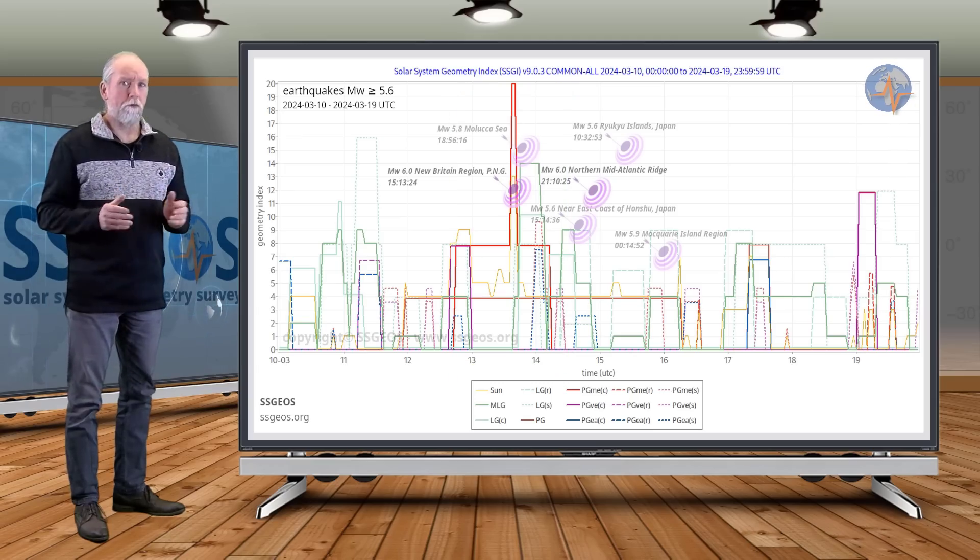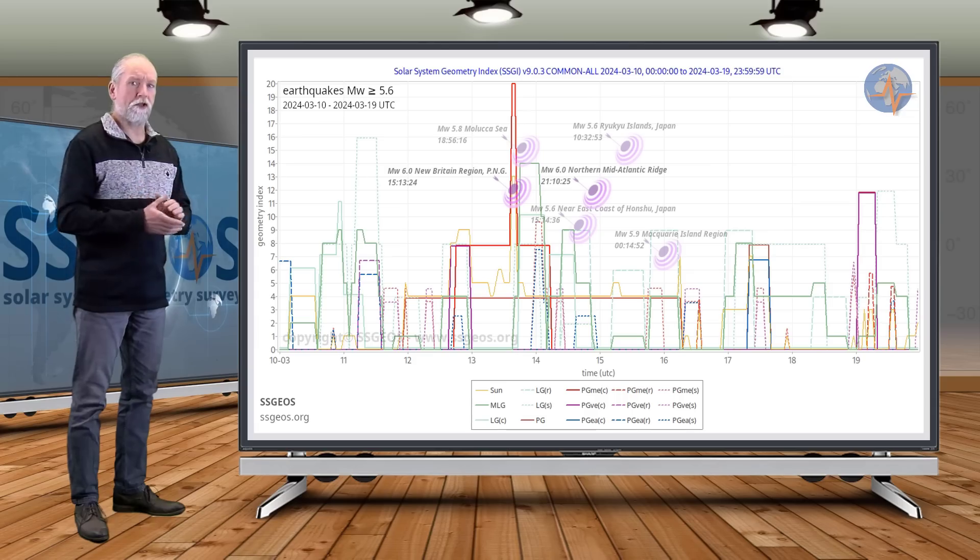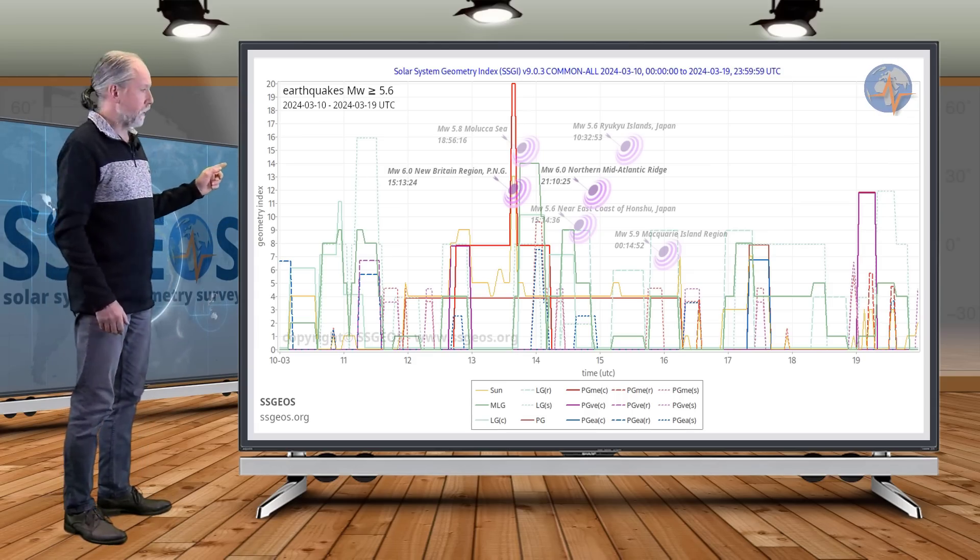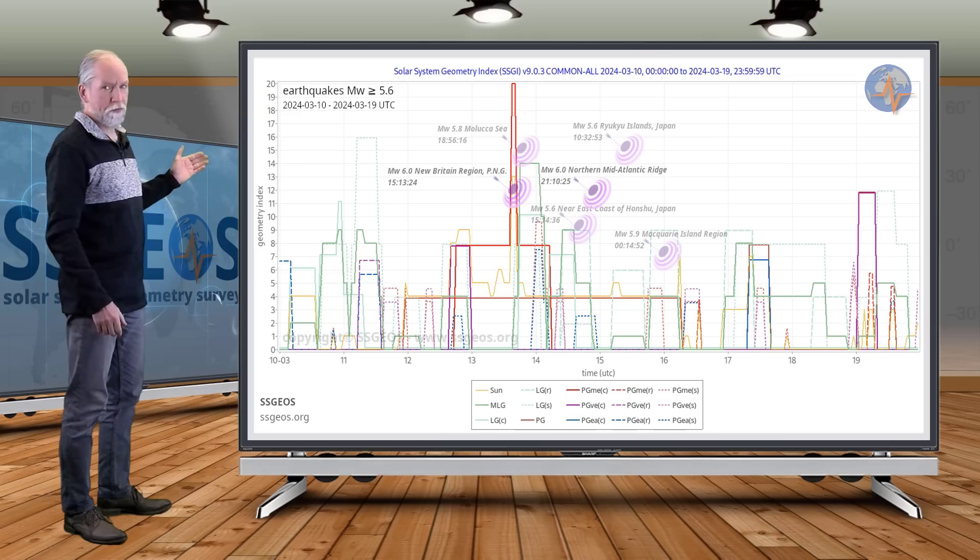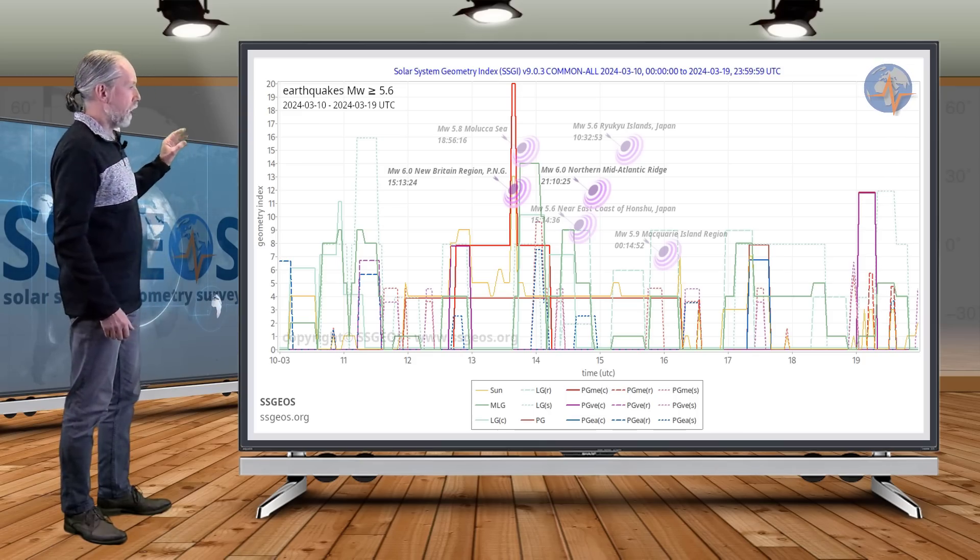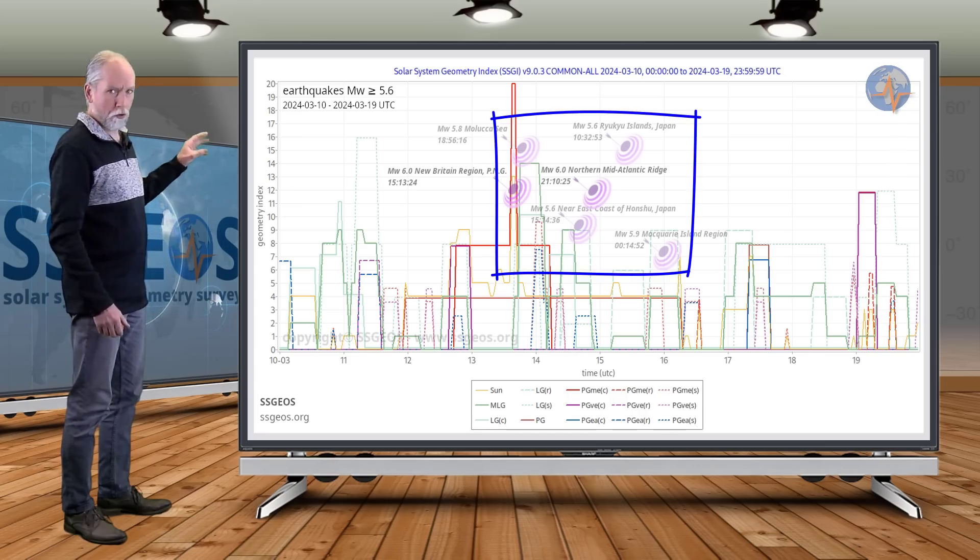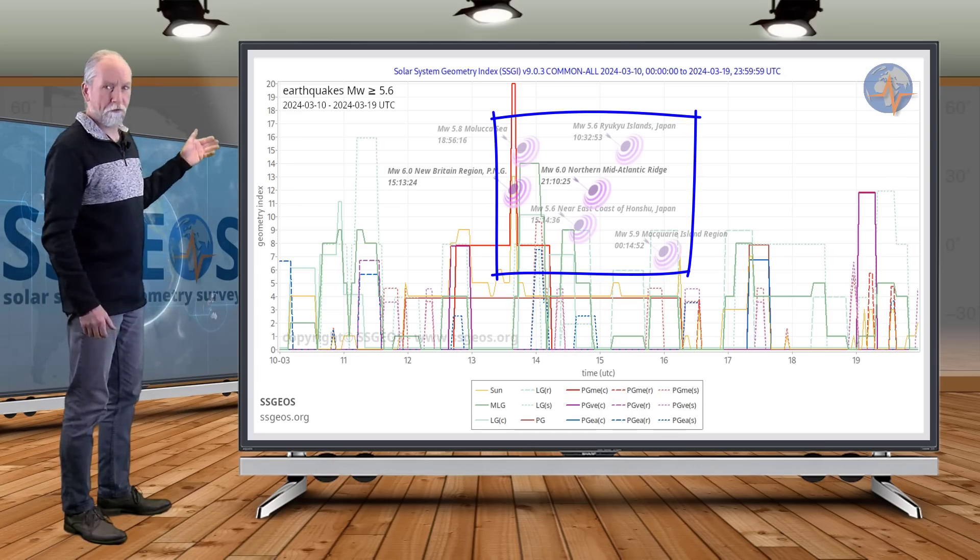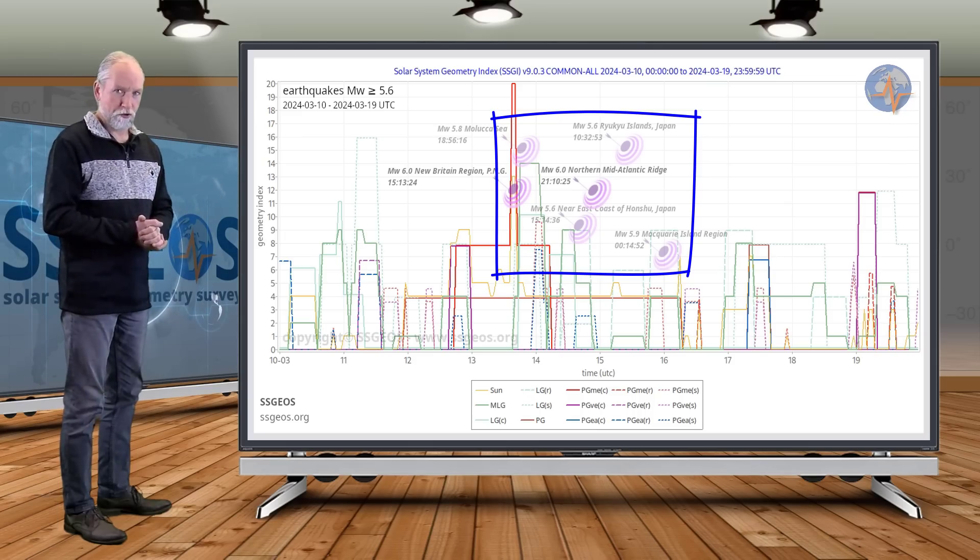We didn't have a major seismic event, but if you look at the SAGI graph from 10 to 19 March and we look at seismic activity magnitude 5.6 and larger, we actually see a clustering of stronger earthquakes starting on the 13th right at the quadruple conjunction.